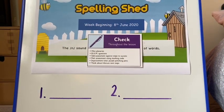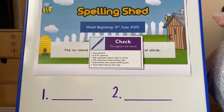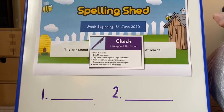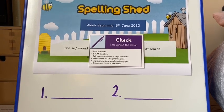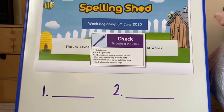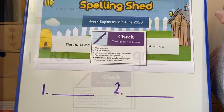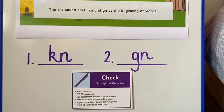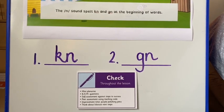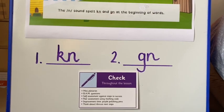This week, Year 2, we're going to look at spellings of words that start with the phoneme N. Now there are two digraphs that make this N sound. I'm going to ask you to pause the video and see if you can remember them. Let's check. As you can see, these are our two digraphs — they make the N sound.